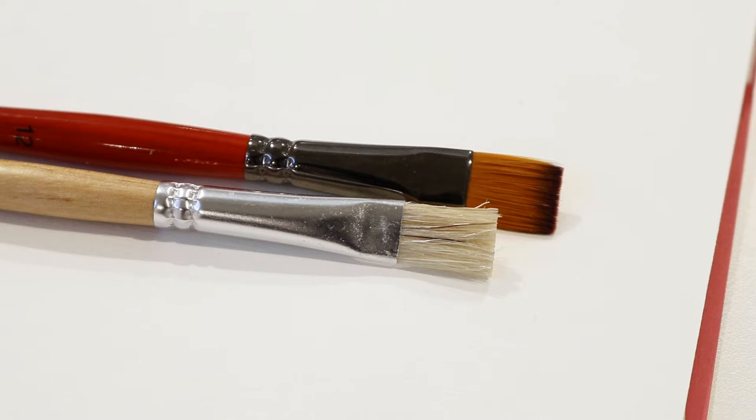While natural bristle such as Hog and Pony are great for oil paints because they maintain their shape after many uses.